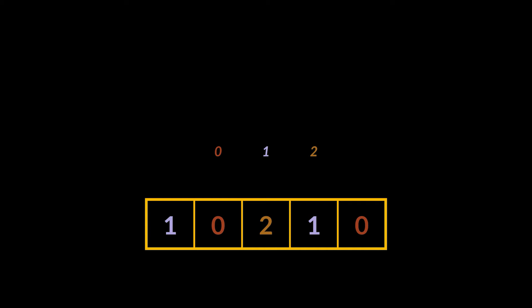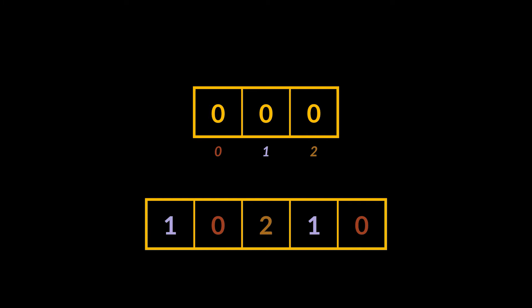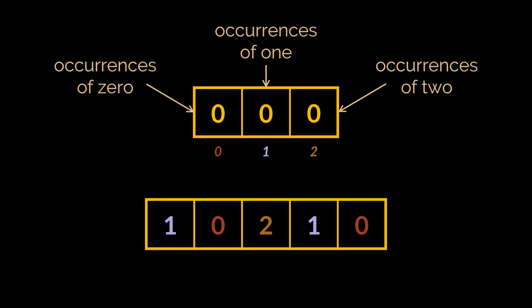All the elements stored inside this array are actually three different integers: zero, one, and two. What this algorithm does is create another array of size three, and these elements — their actual value — will now be used as the index in this new array. The value stored inside each slot, corresponding to each index, is the number of occurrences of that index in the initial array. For example, the integer zero appears twice, so the value stored under index zero will be two. Number one also appears twice, so the value under index one will also be two.